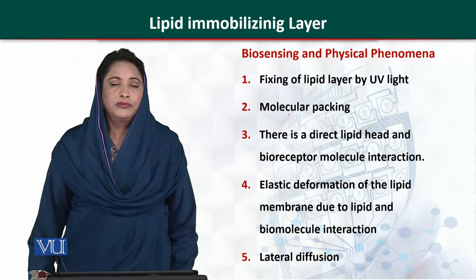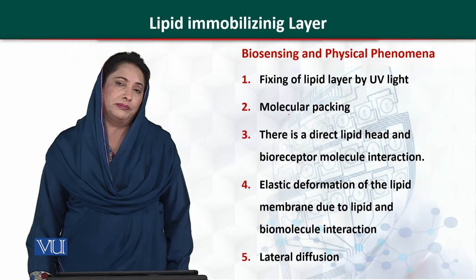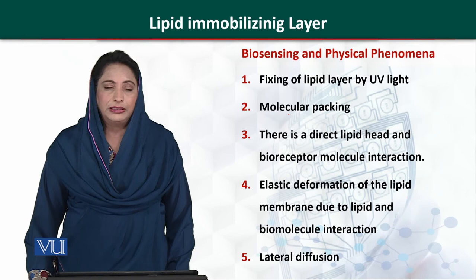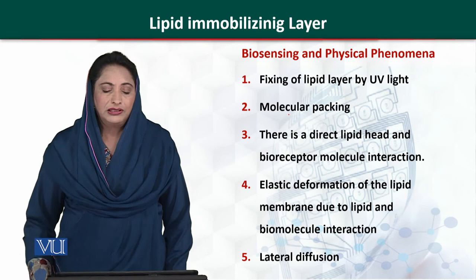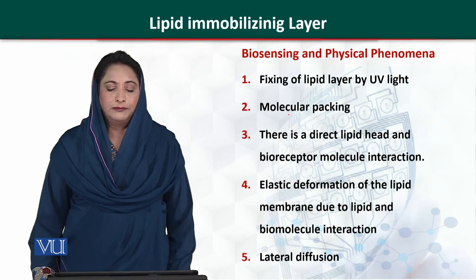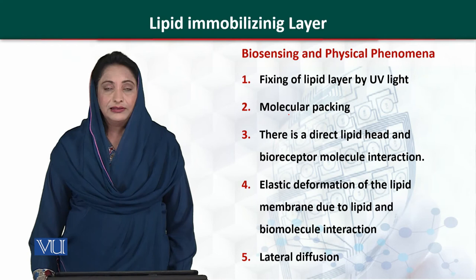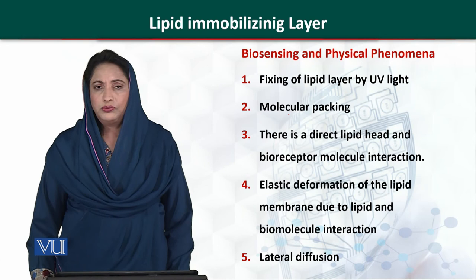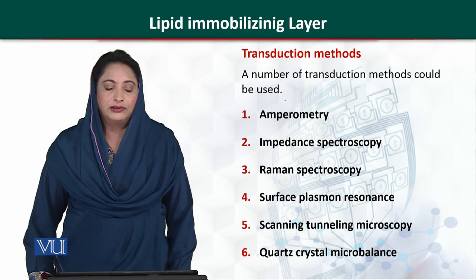If we use a lipid layer for biosensing purposes and attach it on the surface of a transducer, different physical phenomena will occur. There are different strategies to attach the lipid layer: we can use a polymer, UV light, or molecular packing — adjusting or packing the binding molecule on the substrate. There is a direct interaction between the lipid head and the bioreceptor molecule. The lipid head is the phosphate group, and there will be elastic deformation, lateral diffusion, and this signal will be transferred to the transducer.